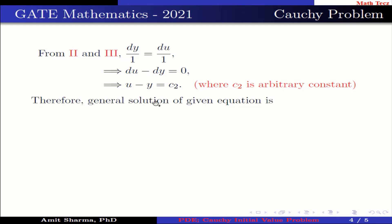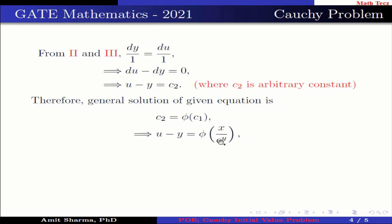Therefore, the general solution of the given equation is c2 equals phi of c1. This implies u minus y equals phi of (x divided by e to the power y), which gives u(x, y) equals y plus phi of (x divided by e to the power y).